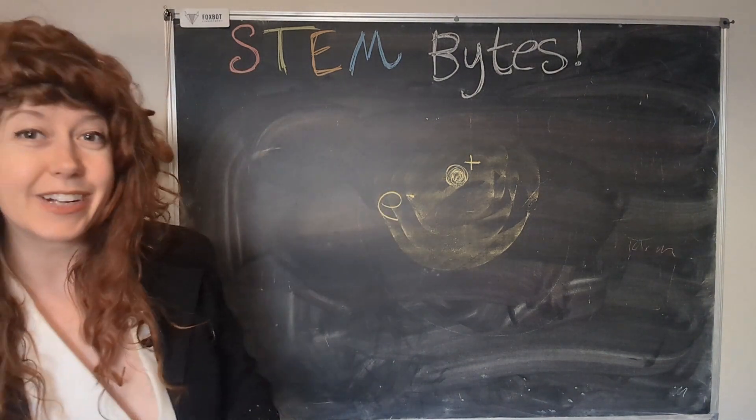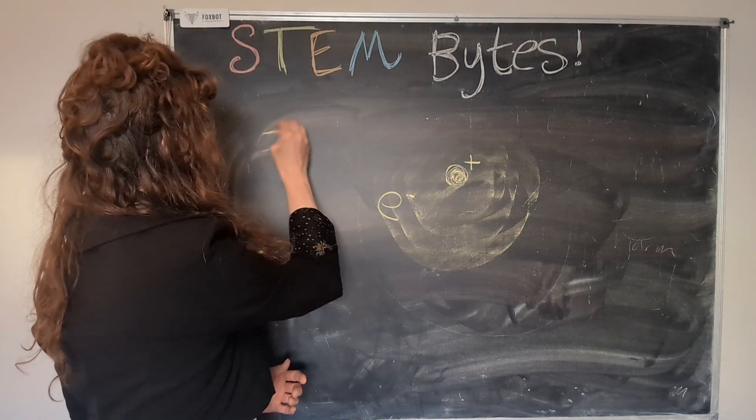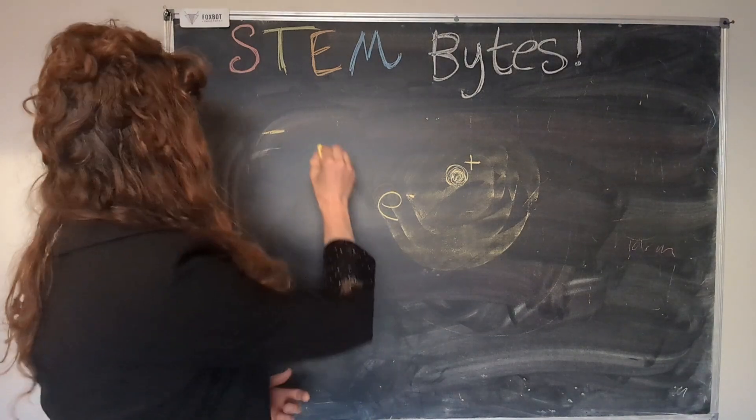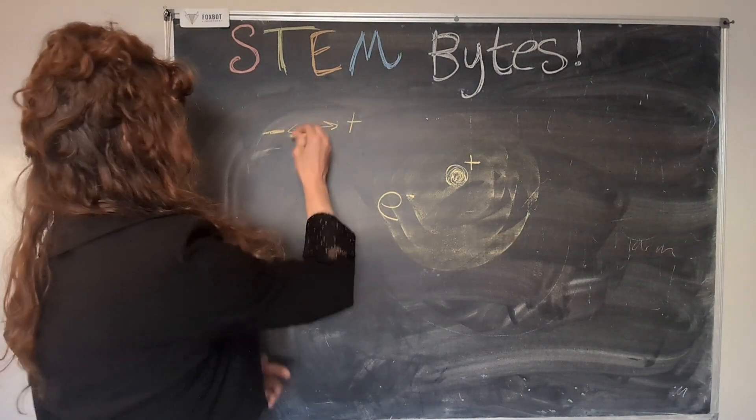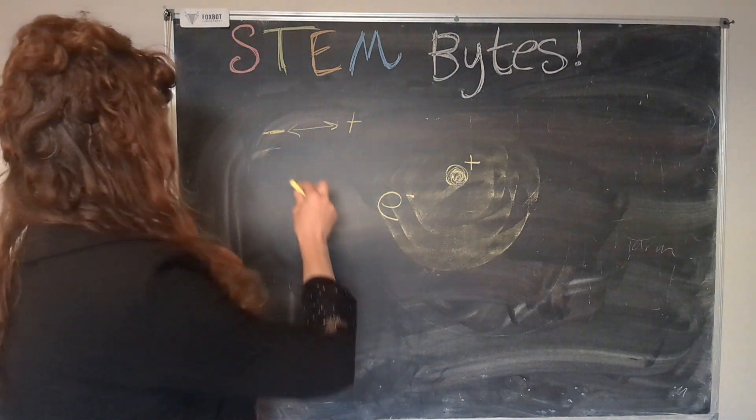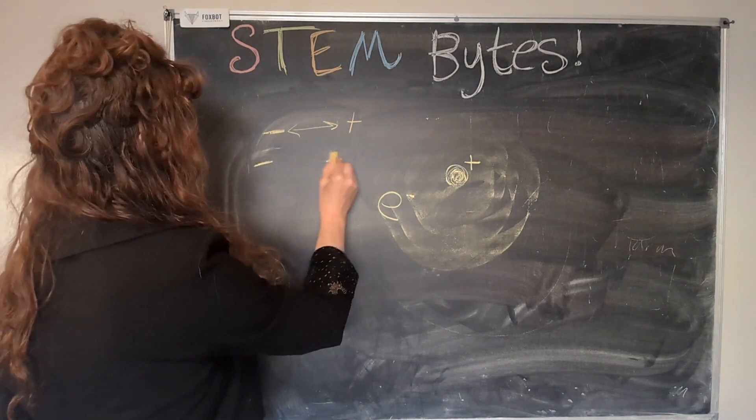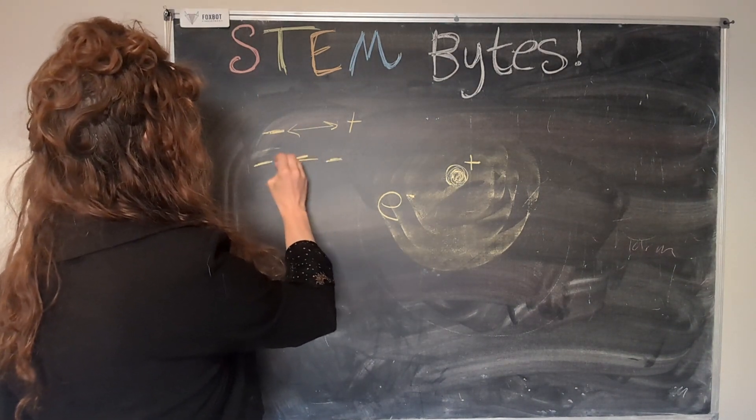So if you have a negatively charged particle, it is attracted to positively charged particles. Just like that. And if you have a negative and a negative, they repel each other.